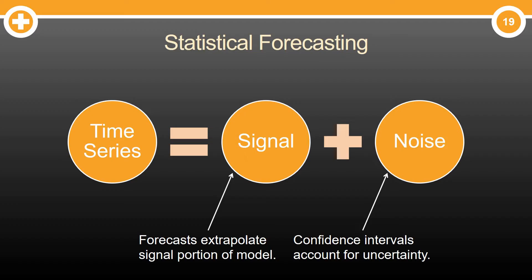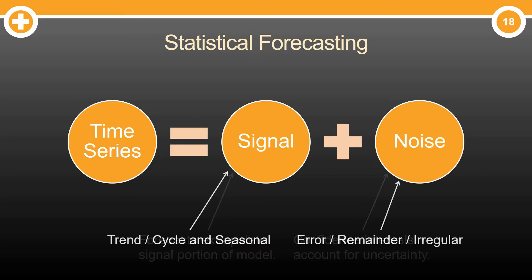But in time series, since extrapolation is bad, we just call it forecasting. With that noise, all we're trying to do is really account for the uncertainty that we have in our forecast. And really that signal usually is broken down into pieces — it's your trend or your cycle as well as your seasonal components, and everything else is sort of the remainder, the error term that we have.